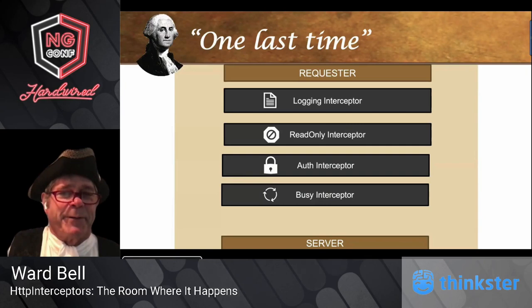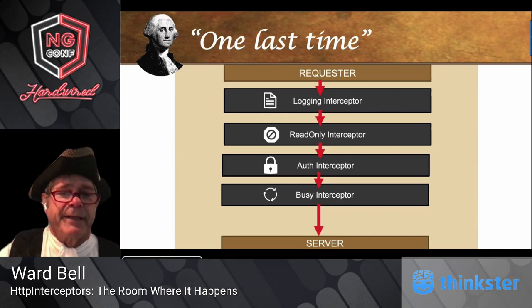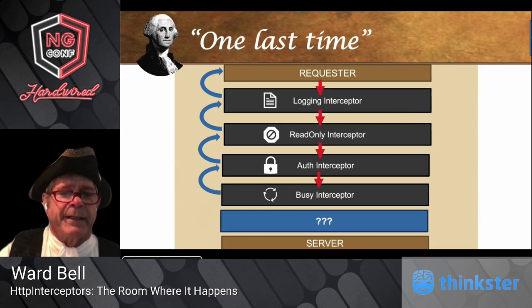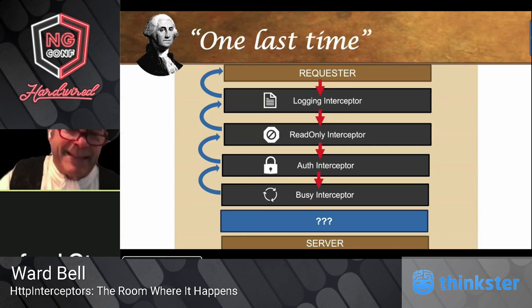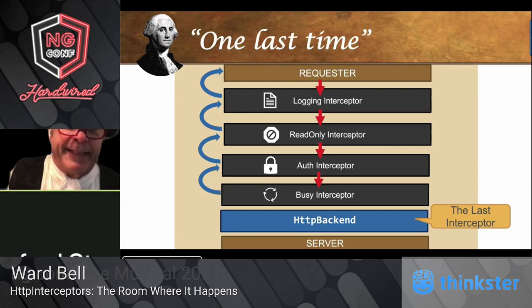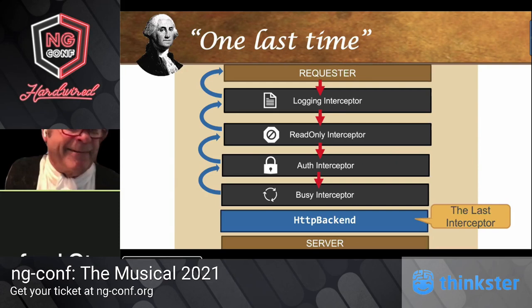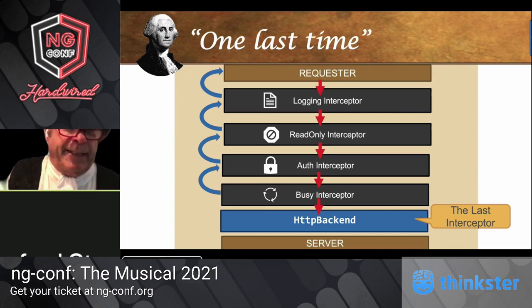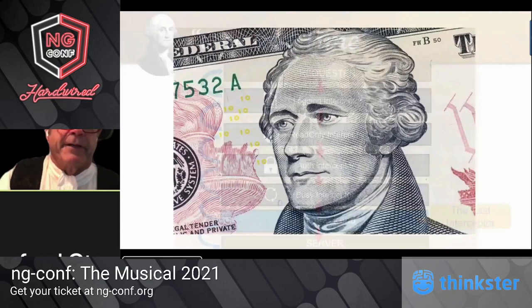One last time through the flow: it goes down through logging, read-only, auth interceptor, busy interceptor, onto the server, and back. But what's in there making the actual call? It turns out HTTP client has a final interceptor — there is exactly one — called HttpBackend. You can actually replace it (the Angular in-memory web API does replace it), but it's guaranteed to be last no matter what other interceptors you set up. That's the one that makes the XHR call.